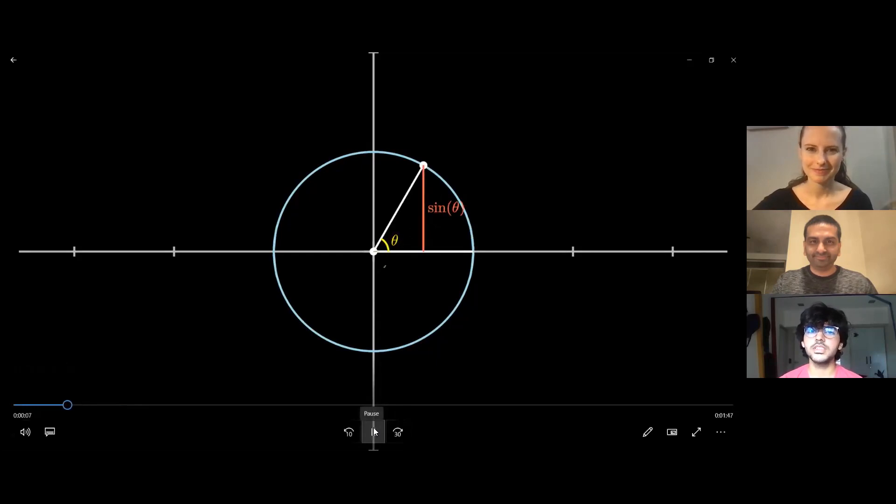So in a unit circle, we know that the y coordinate of the point, the end of the radius, is sine theta, and the x coordinate is cosine theta. Could you remind us, Nicole, why it's sine and cosine again? Yeah, sure. So by definition, the radius of a unit circle, this white line here, that is equal to one unit in length.